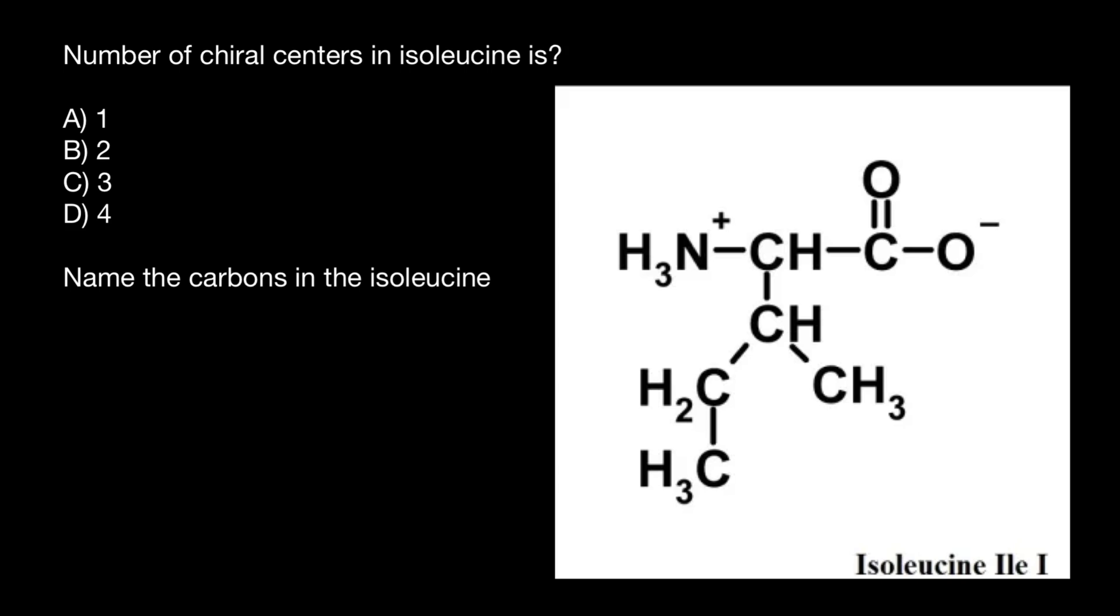And you probably know that one of the chiral centers would be carbon alpha, which is here. Now let's check to how many different groups this carbon is attached. From this side, it is attached to amino group. From the other side, it is attached to hydrogen. We also can put it here.